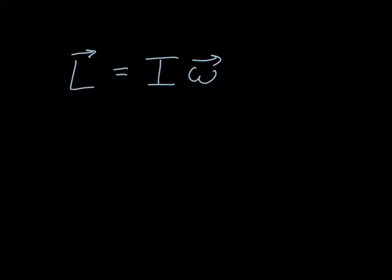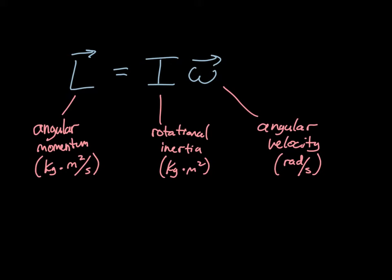Before we solve the problem, let's recall that angular momentum — the L term — is equal to the rotational inertia of some object or system times that object or system's angular velocity. As far as units go, rotational inertia is in kilogram meters squared, angular velocity is in radians per second, and multiplying those gives kilogram meters squared per second. The radians drops out, since radians are unitless — really just a ratio.